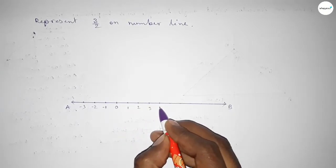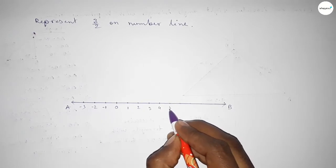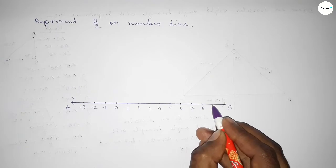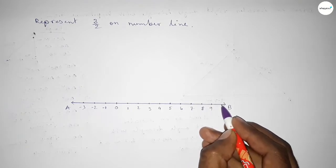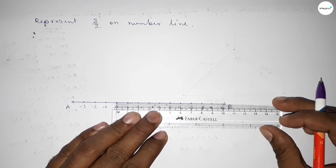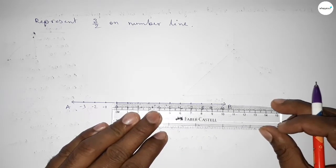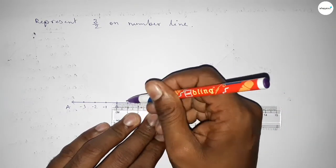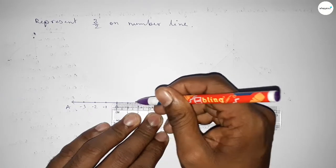3, 4, 5, 6, 7, 8, 9, and this is 10. Now we have to divide the length between 0 to 1 and 1 to 2 by 2. So this is half and this is also half between 1 to 2.